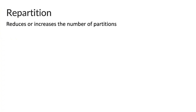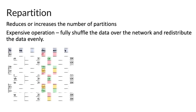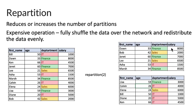Repartition is used to reduce or increase the number of partitions. Because repartition fully shuffles the data over the network, it redistributes the data evenly. For example, with repartition(2), the data is partitioned into two different sets. If you closely look at the data, you can see it is fully shuffled compared to the original DataFrame, because repartition does a full data shuffle and redistributes the data evenly. As a result, both datasets are of the same size and the data is evenly distributed.